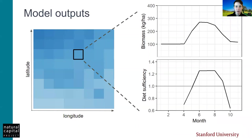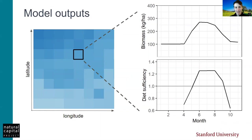The main outputs of the model are rasters covering the study area for each monthly time step for which the model was run. For each of these, you will get rasters of standing biomass — our indicator of rangeland condition — and diet sufficiency — our indicator of animal condition. Since each of these are rasters, it is possible to construct time series such as you see on the right. However, that would need to be done in post-processing of model outputs.